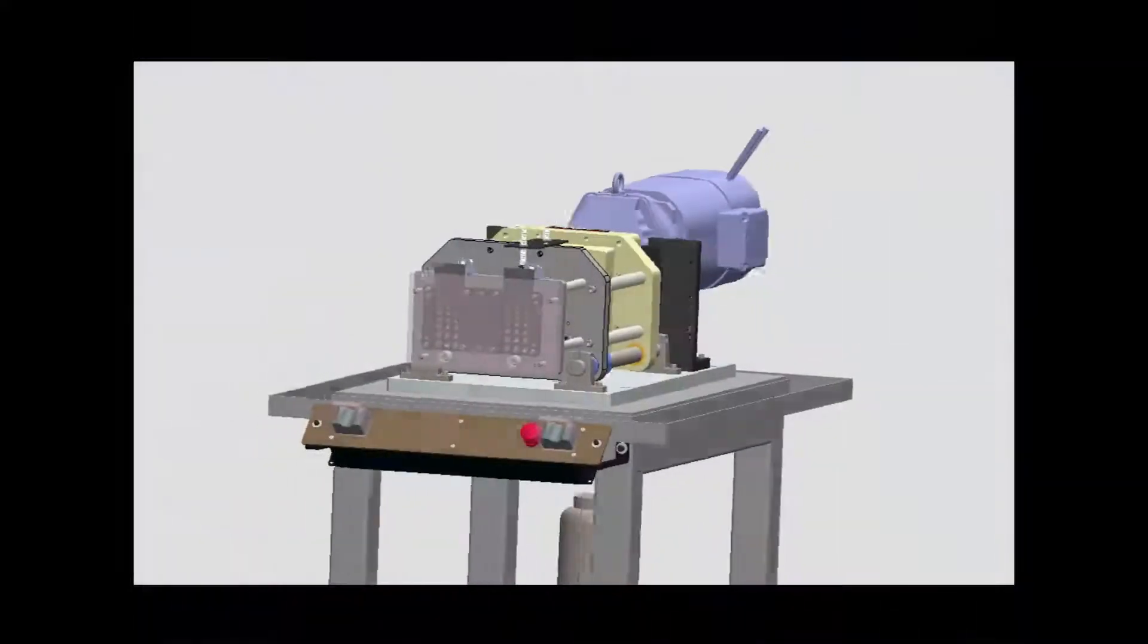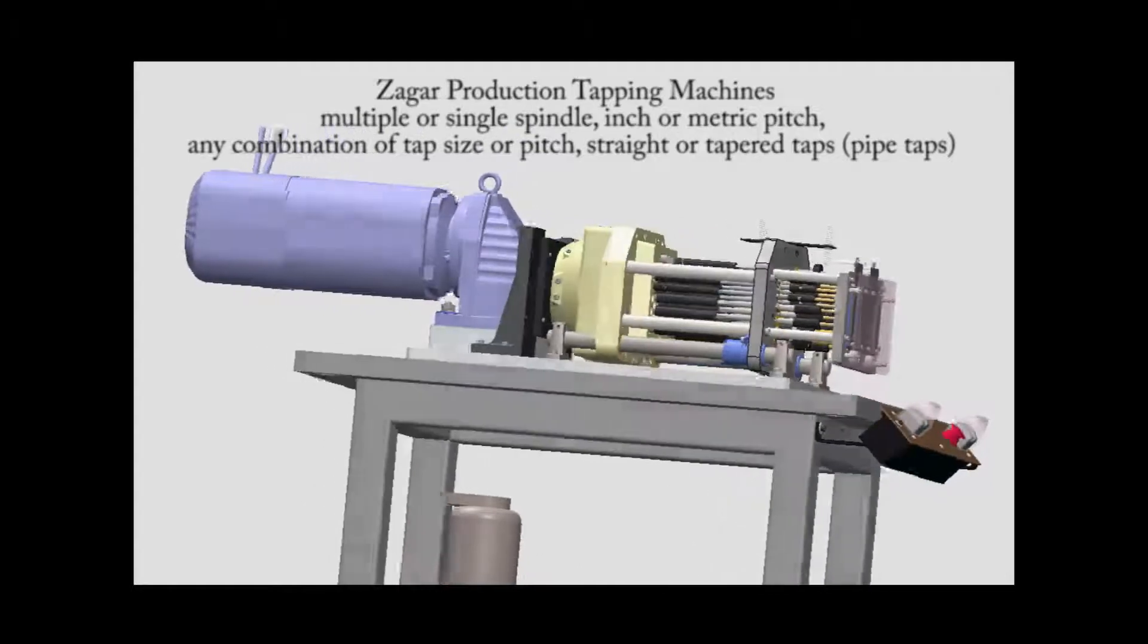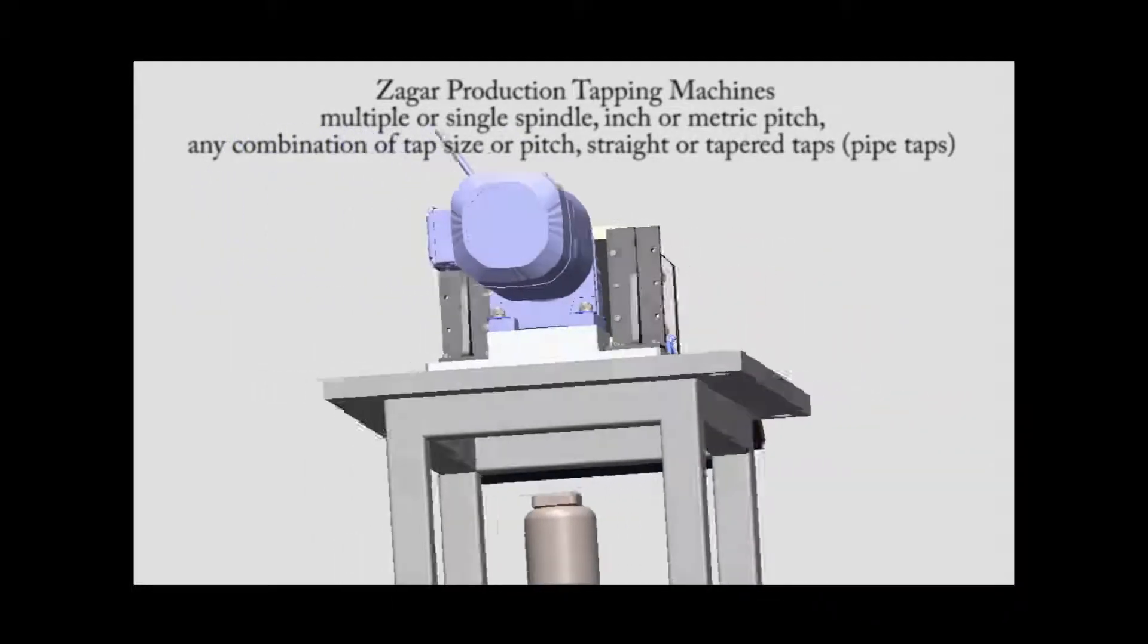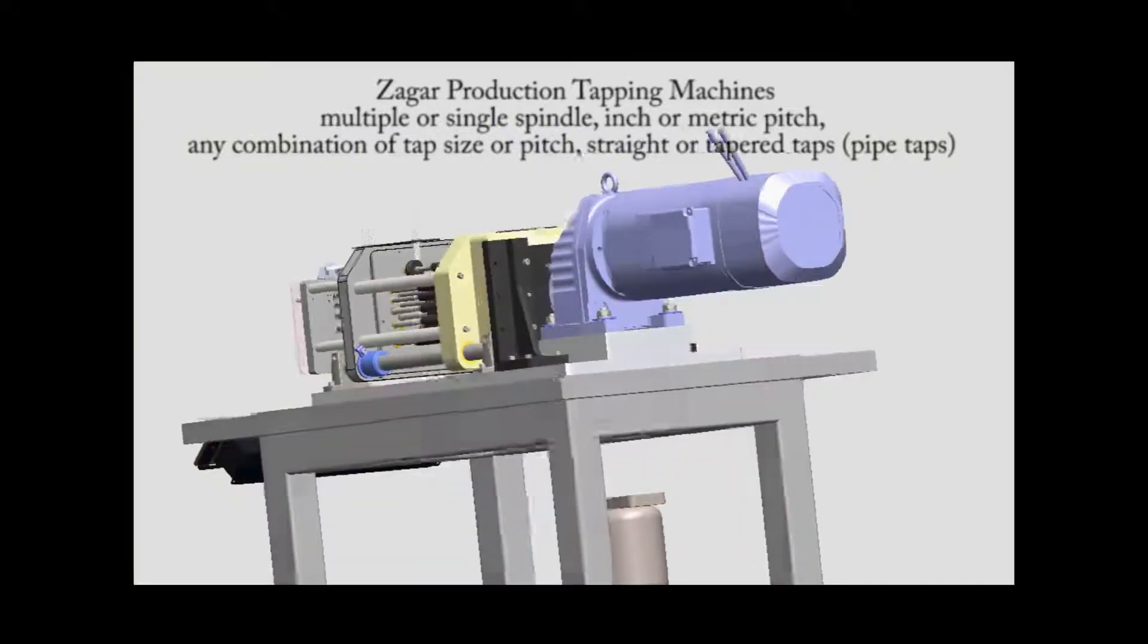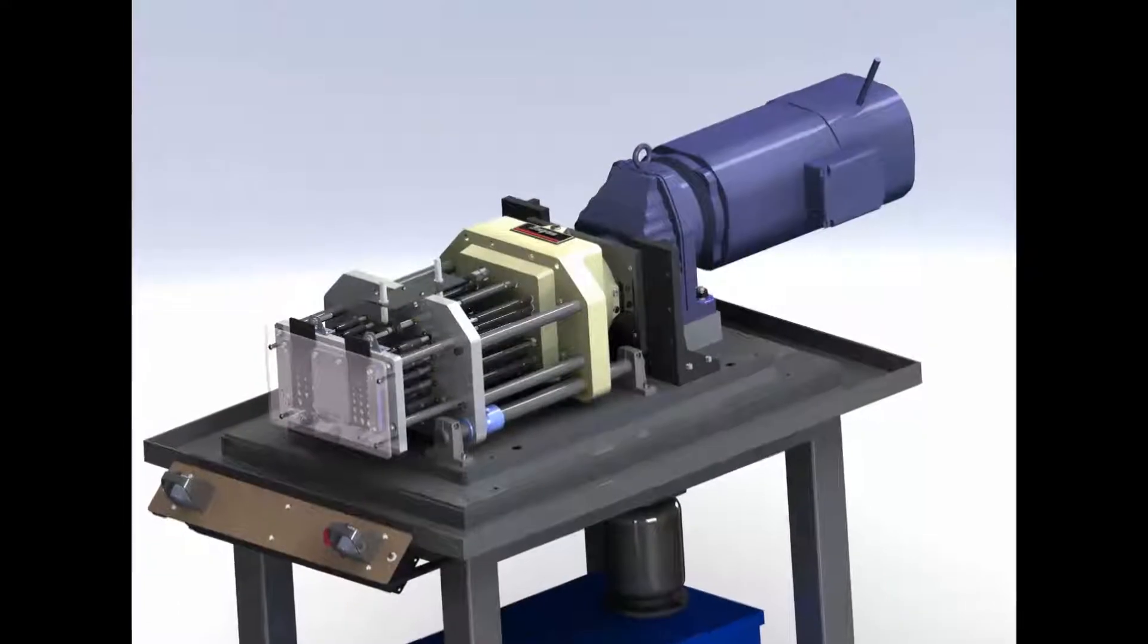Machines are concepted and engineered by Zagar Incorporated in 3D using SOLIDWORKS. Software for viewing files is a free download, enabling concurrent design and interchange of drawings with end-users of machines. Assembly drawings include exploded views and bills of material that are accessible online to maintenance personnel.